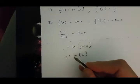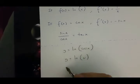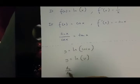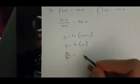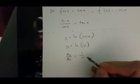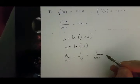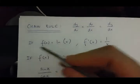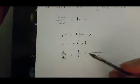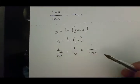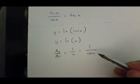If y equals ln u, then dy over du is going to be equal to 1 over u, which is 1 over cos x. Because of this rule over here, and the fact that u is equal to cos x.